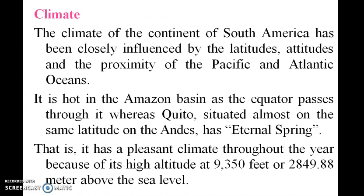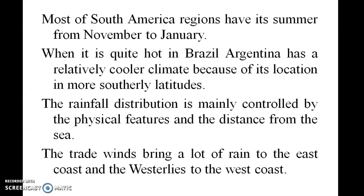The climate of South America has been closely influenced by latitude and the proximity of the Pacific and Atlantic Oceans. It is hot in the Amazon basin as the equator passes through it, whereas Quito, situated at almost the same latitude on the Andes, has an eternal spring. Most of the South American region has its summer from November to January.